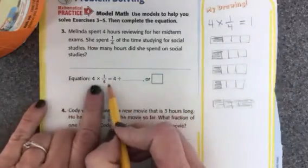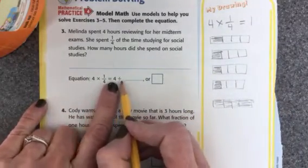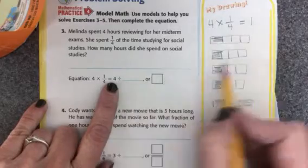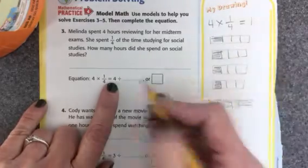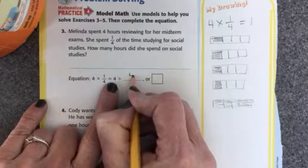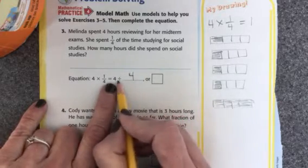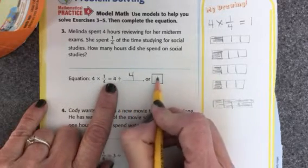And here's how we explain it. 4 times one-fourth is the same as 4 divided by 4, we're dividing by four because that's how many pieces, how many fourths we put in. And when we have 4 divided by 4, our answer is one whole.